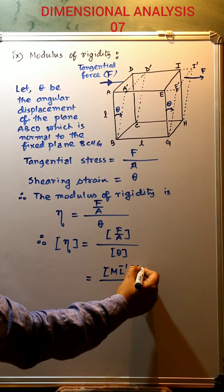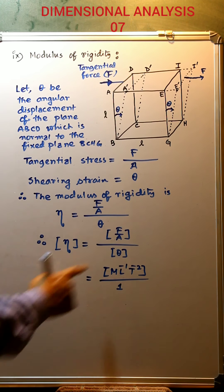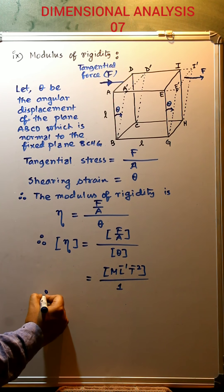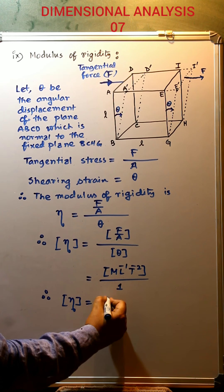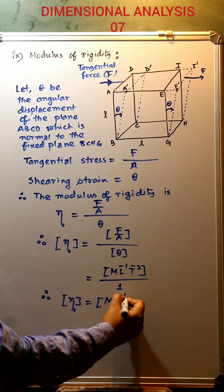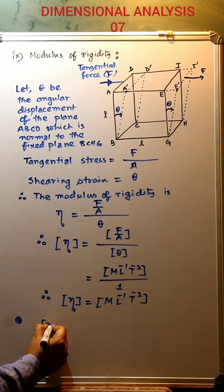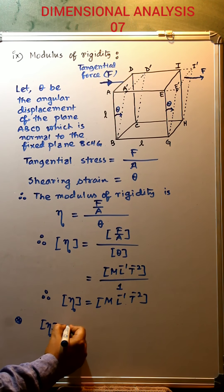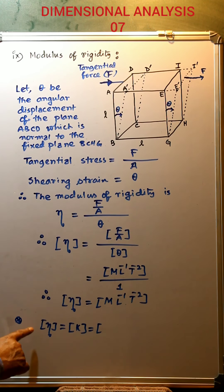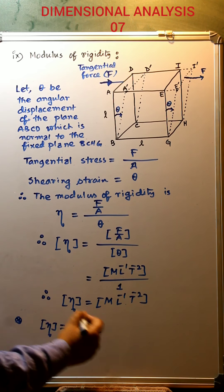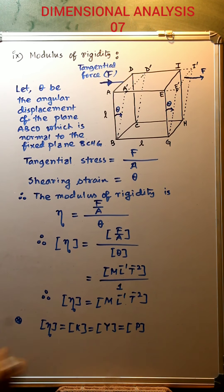The dimension of theta is 1 (dimensionless), because theta is an angle which has no dimension. So finally we get the dimension of modulus of rigidity as M L⁻¹ T⁻². We can conclude that the dimension of modulus of rigidity, bulk modulus, Young's modulus, and pressure are all the same: M L⁻¹ T⁻².